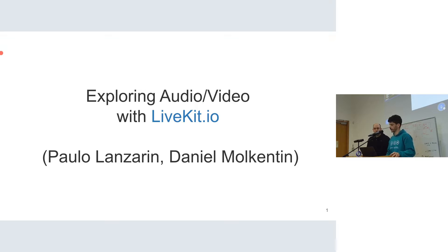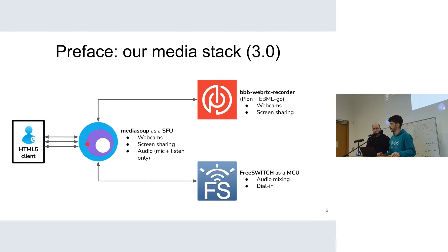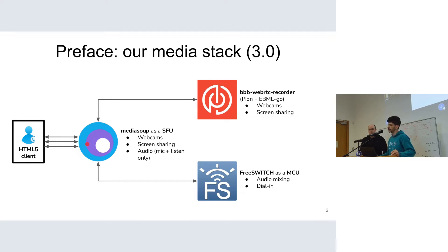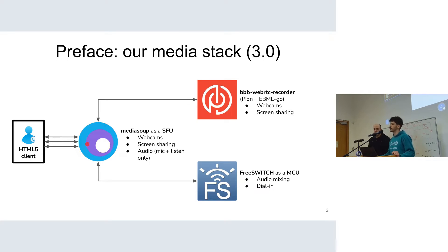Just to give a little introduction and a clear view on why we are doing this — this is our current media stack as of 3.0. We have three different components as far as direct media handling is concerned. We use MediaSoup as our client-facing media server, FreeSwitch as our audio backend, and a Pion-based recorder to record our stream. So three components, not counting the extra two or three we use for signaling and state management.